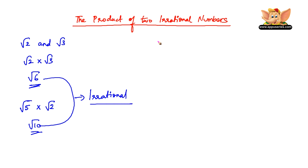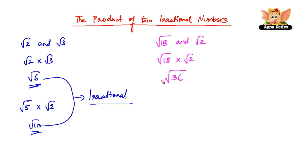But let us now consider the product of root 18 and root 2, which is root 18 into root 2, which is root 36. And root of 36 is 6, which happens to be a rational number.